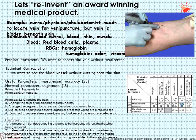The problem statement is we want to access the vein without trial and error. The technical contradiction is we want to see the blood vessel without having to cut open the skin. Stretching our imagination to fit this into the 39 parameters, I chose measurement accuracy as the useful parameter — because we want to identify that vein accurately — and brightness as the harmful parameter, since we can't see the vein against the background of the skin. Referring to the contradiction matrix, the three inventive principles provided are 1 (segmentation), 6 (universality), and 32.